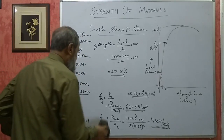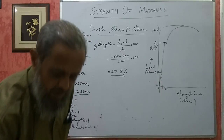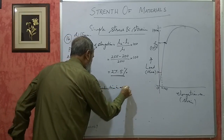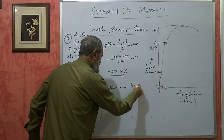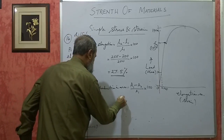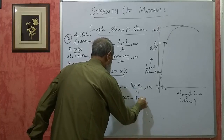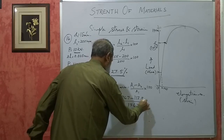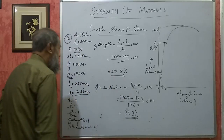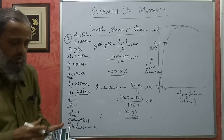Percentage reduction in area = (A1 − A2) / A1 × 100. A1 is 176.7 mm square, A2 is 117.8 mm square, so this works out to 33.3 percent. This is how this problem is to be done — this type of calculation you will also do in the mechanical testing lab.